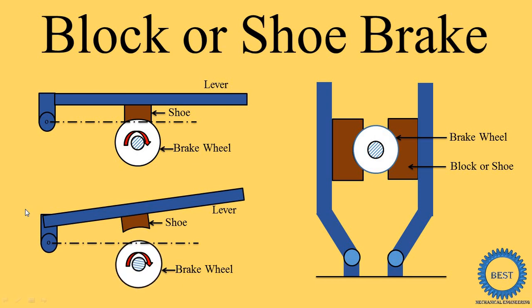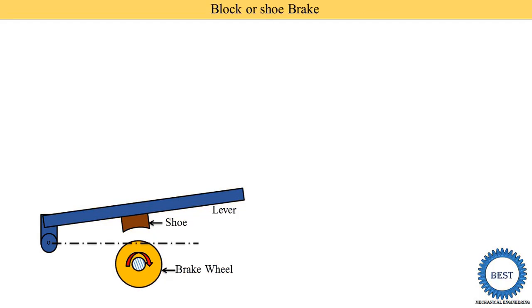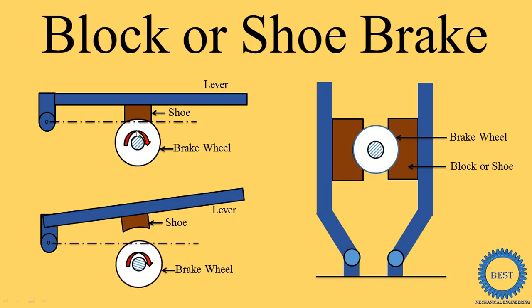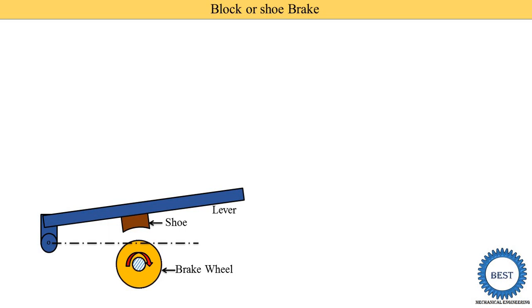In this video I explain block or shoe brake. There are two types of block or shoe brake. The first is the single shoe brake, in which only one block or shoe is used, and the second is the double shoe brake, in which two blocks or shoes are used.